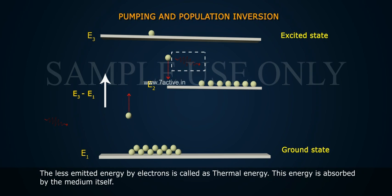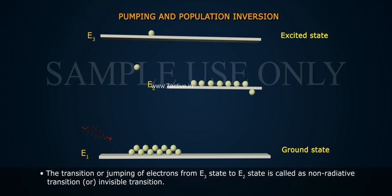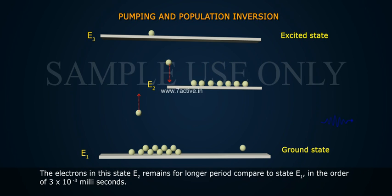The less emitted energy by electrons is called as thermal energy. This energy is absorbed by the medium itself. The transition, or jumping of electrons, from E3 state to E2 state is called as non-radiative transition, or invisible transition.